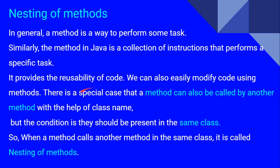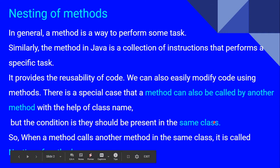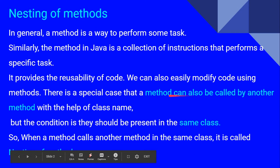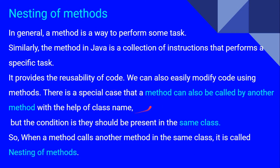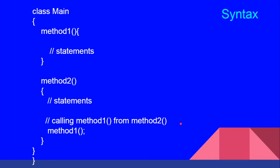There is a special case where a method can also be called by another method. The condition is that they should be present in the same class. Within the same class, one method can call another method. When a method calls another method in the same class, it is called nesting of methods. The calling method and the called method must be in the same class — that is the condition.